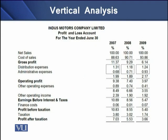If we look at the profit and loss account, we can see that net sales have been fixed at 100. This means that every other variable has been derived from net sales. In 2009, cost of sales was 93.86% of net sales, leaving a gross profit of 6.14% of sales. Similarly, operating profit was 3.97% of sales, and after-tax profit in 2009 was 3.66% of sales.